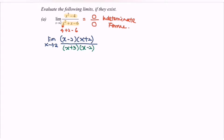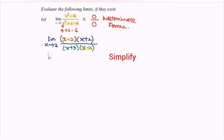Next, we find the common terms. We notice that both the numerator and the denominator have the factor (x minus 2), so we can cancel it. This leaves us with the limit when x approaches 2 of (x plus 2) over (x plus 3).